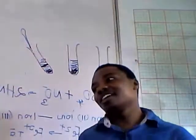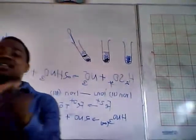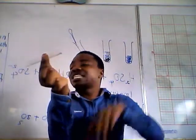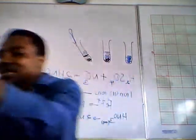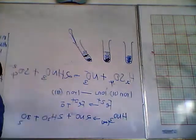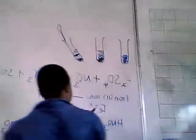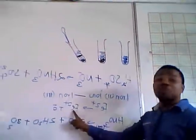Sulfuric acid is always added while the test tube is in a slanting position so that it goes in slowly. What you will be asked in an exam is to explain the brown ring: it is iron(II) nitroso sulfate, and the brown color comes from this compound.